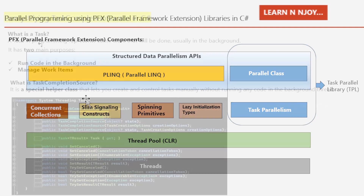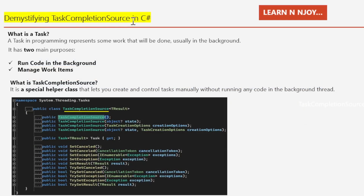First, let's talk about what a task is in programming. A task represents some work that will be done, usually in the background. It has two main purposes. Number one: run code in the background — it schedules a piece of code in the form of a delegate to run on a background thread. Number two: manage work items — it provides tools to handle tasks such as setting what happens when the task is done via continuations, managing child tasks, and handling errors.